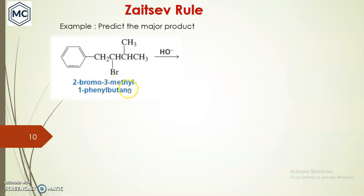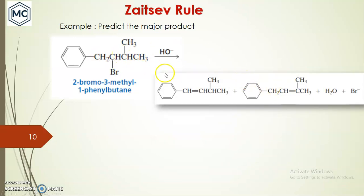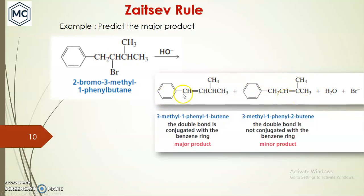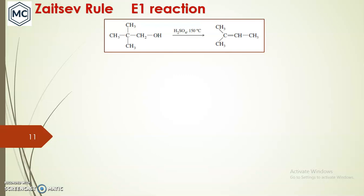Another case: 2-bromo-3-methyl-1-phenylbutane. Hydrogen can be eliminated from two positions to give two different products. The major product is the one where the double bond is conjugated with the benzene ring, even though it is the less substituted alkene. Conjugation with the benzene ring stabilizes this product, making it major. The product without conjugation is the minor product.